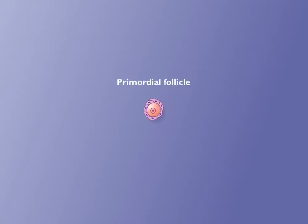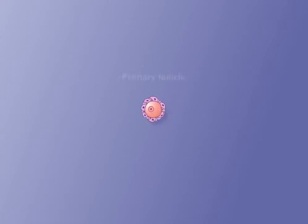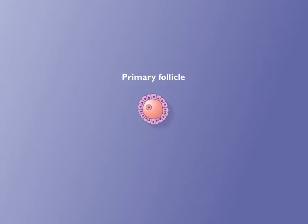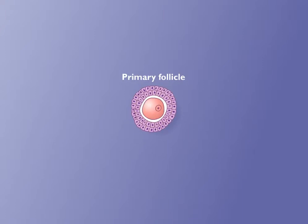A primordial follicle consists of an oocyte surrounded by a single layer of squamous granulosa cells. A primordial follicle becomes a primary follicle as the granulosa cells become enlarged and cuboidal. The primary follicle enlarges and the granulosa cells form more than one layer.